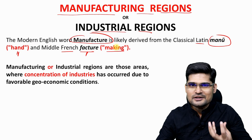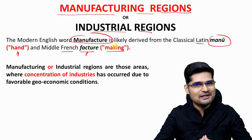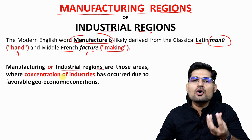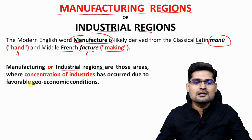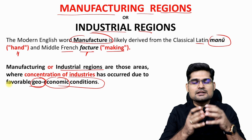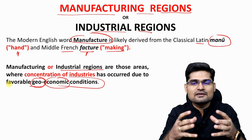Manufacturing or industrial regions are those areas which have a concentration of industries or manufacturing units that have occurred due to favorable geoeconomic conditions — both geographical and economic conditions. When these conditions are concentrated in a given area and are favorable for the production or manufacturing of various goods, it is considered a manufacturing region.